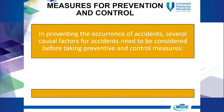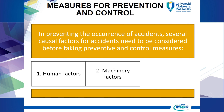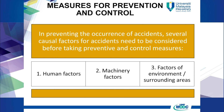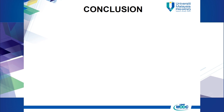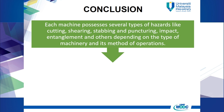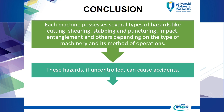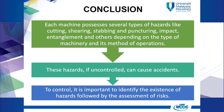In preventing the occurrence of accidents, several causal factors need to be considered before taking preventive and control measures: number one, human factors; number two, machinery factors; and number three, factors of environment or surrounding areas. As a conclusion, each machine possesses several types of hazards — such as cutting, shearing, stabbing and puncturing, impact, entanglement, and others — depending on the type of machinery and its method of operations. These hazards, if uncontrolled, can cause accidents. To control them, it is important to identify the existence of hazards followed by the assessment of risks.